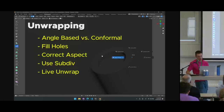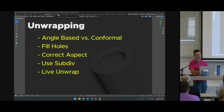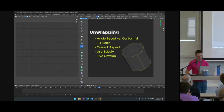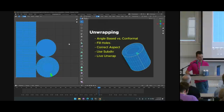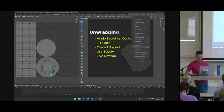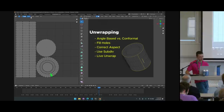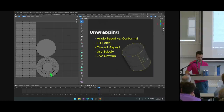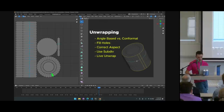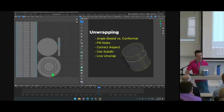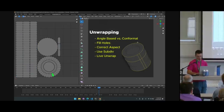Live Unwrap is one way to unwrap very quickly — anytime you place a seam, it unwraps the entire object automatically. You turn it on in two places: Options in the 3D viewport under 'Live Unwrap', and in the UV Editor under 'UV Live Unwrap'. Then any time you mark a seam, it should unwrap everything for you. This is extremely fast and helpful, but there is one issue with it I want to talk about.